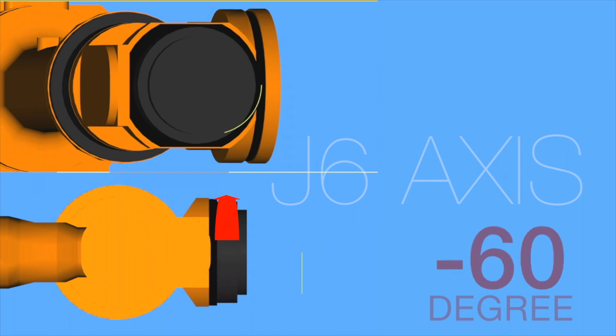It is usually capable of more than a 360-degree rotation in either a clockwise or counterclockwise direction. This axis is also known as the Motoman J6.